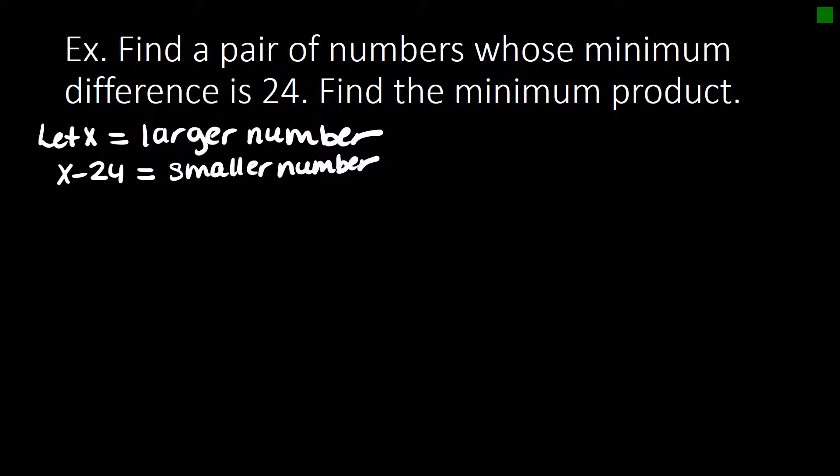So it says that they want to find a minimum product. So the product of these two numbers is going to be x times x minus 24 or x squared minus 24x.